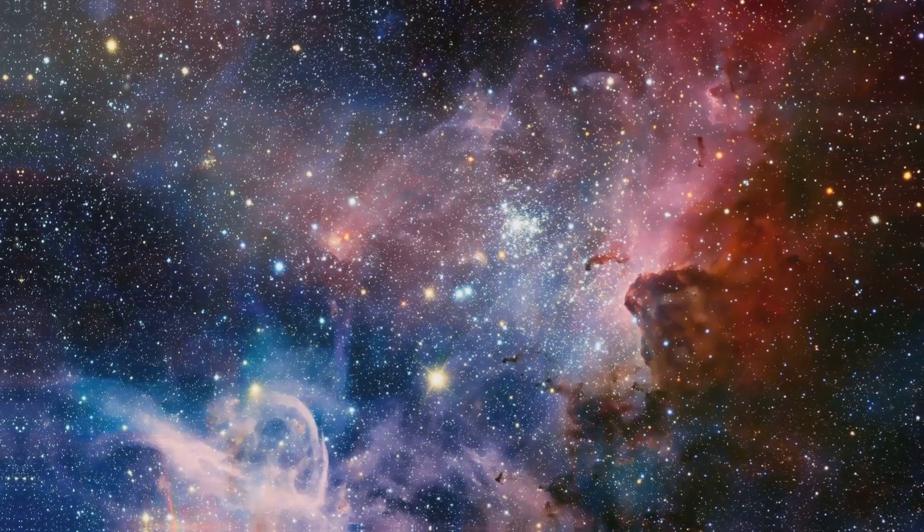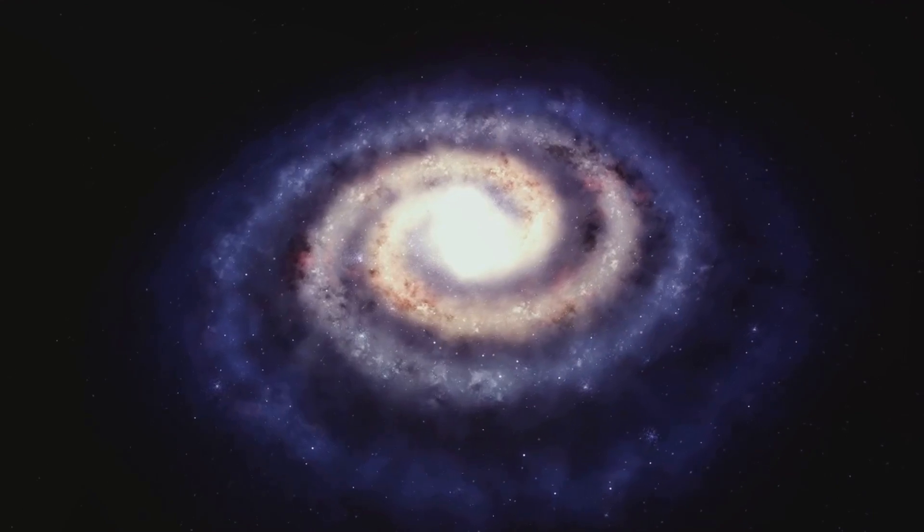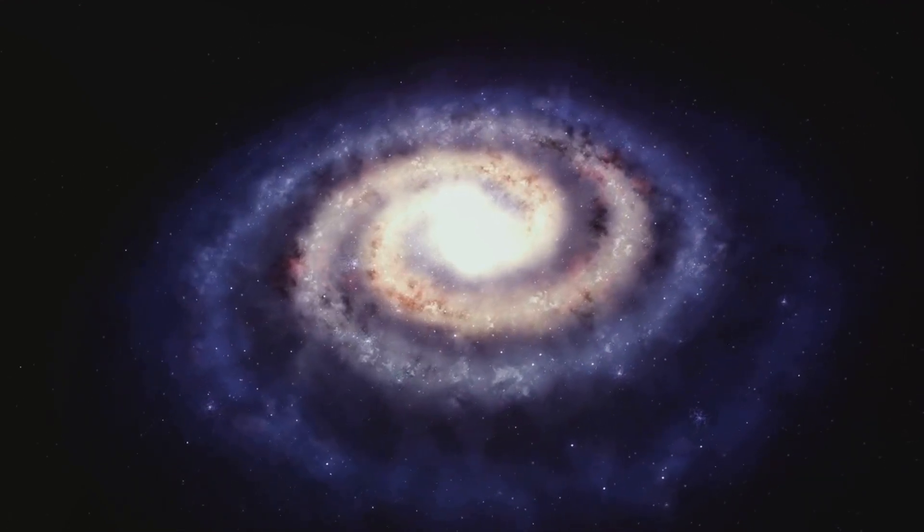Picture a swirling nebula, a vast cloud of gas and dust. Gravity pulls this material together causing it to spin and flatten into a disk. In the center, a new star ignites, while around it, dust particles begin to collide and stick together, forming planetesimals, the building blocks of planets.